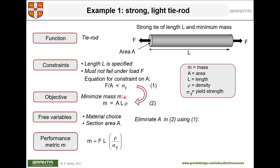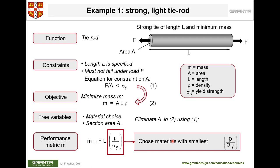To resolve the conflict, we eliminate A between the two equations. The performance equation becomes M as a function of F, L, ρ, and σ_y. Rearranging, the material index is ρ/σ_y, which we want to minimize — or equivalently, maximize σ_y/ρ. In this problem we don't care about elastic modulus or other properties; only yield strength σ_y and density ρ matter, and the relationship is linear.